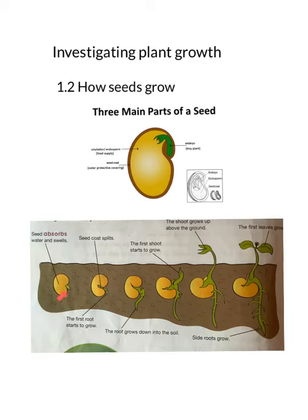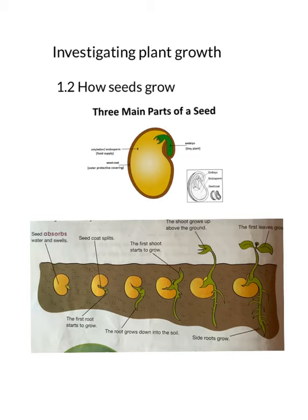Unlike plants, seeds do not receive sunlight. Plants prepare their food by harvesting sunlight, but a seed has no leaf to prepare its own food. Hence, the embryo growing inside the seed uses up the food store to grow. A seed can remain dormant until it receives the required conditions, like enough water and a proper medium like soil.